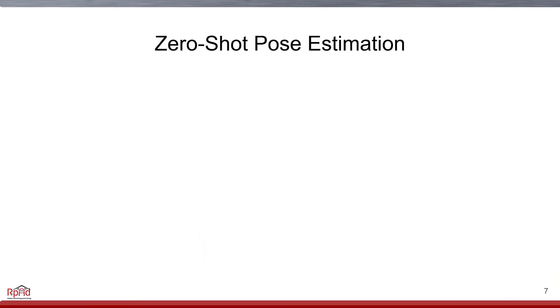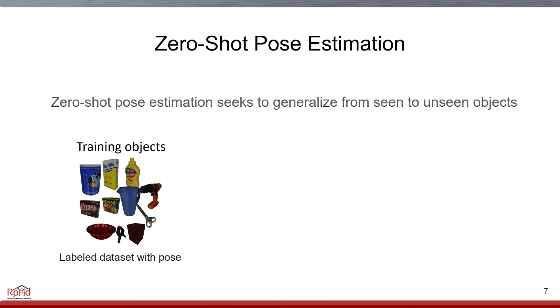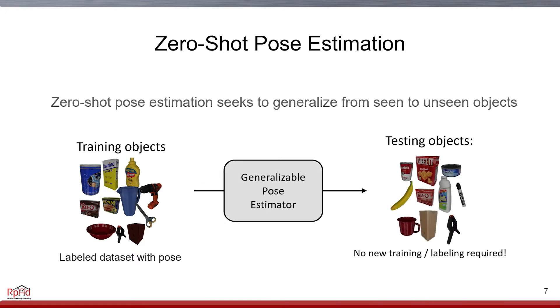In this talk, we will be describing the zero-shot pose estimation problem. This problem seeks to generalize between seen and unseen objects. We use labeled data to learn the algorithm that can be extended to novel objects, without the need for labeling or retraining.